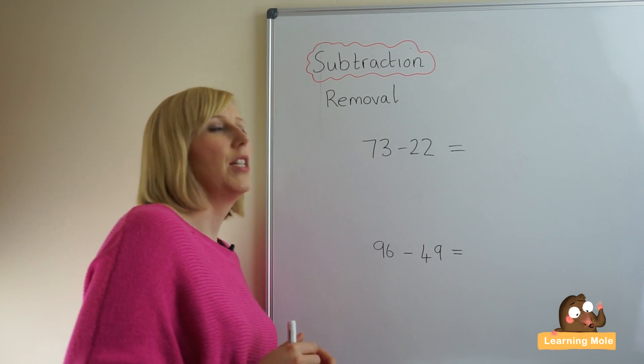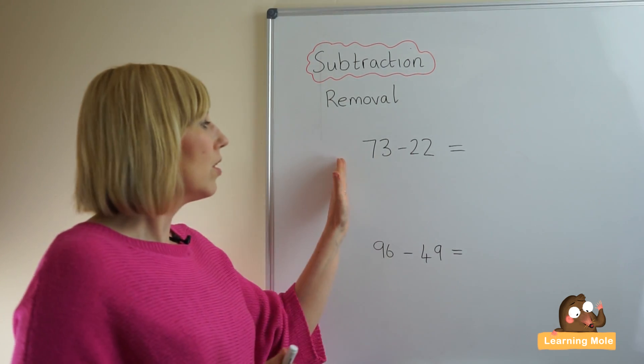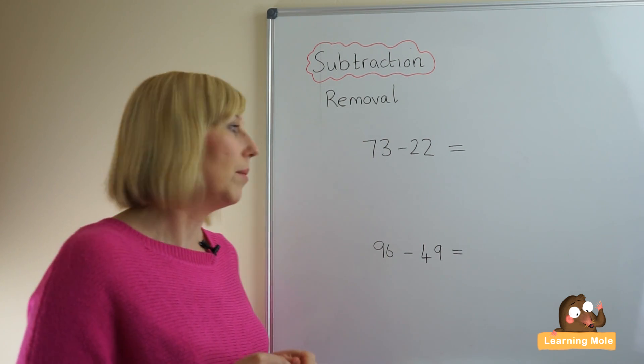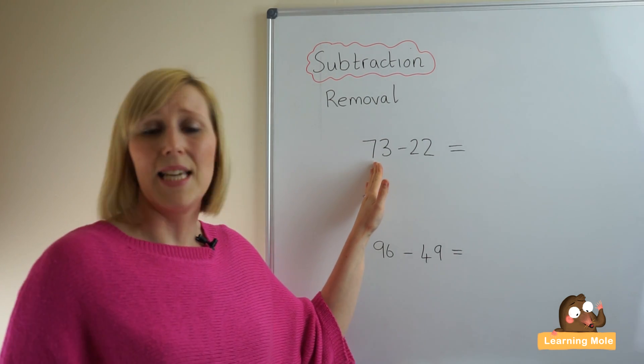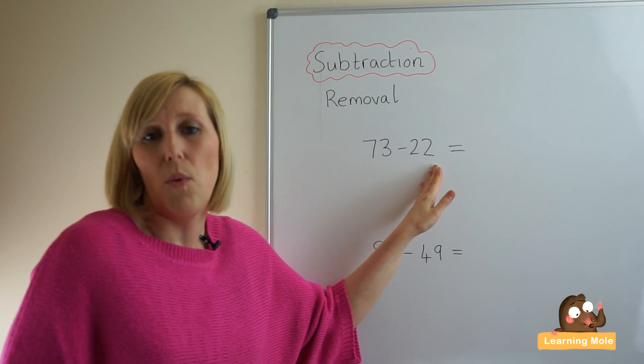So let's look at the calculation. For this one we can use two two-digit numbers, so we're going to subtract two two-digit numbers in this case. We're going to leave the biggest number as is and we're going to remove the smaller number, we're going to take it away.